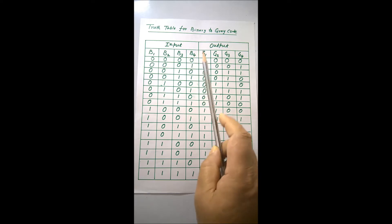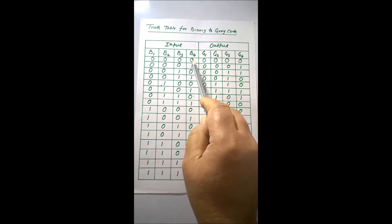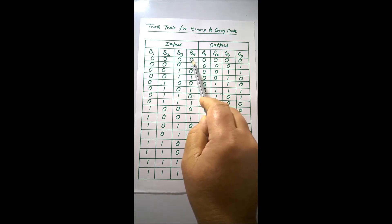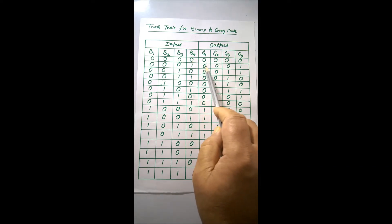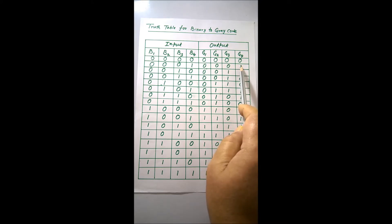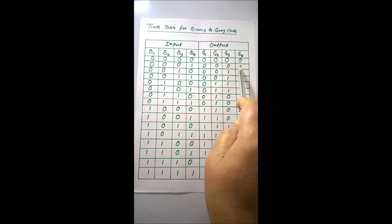Next, for the first case, you take the least significant bit — that means b4 — and make its complement. Complementing it gives 0001. Since this number was not previously existing, it is accepted. Therefore, 0001 is the next Gray code.